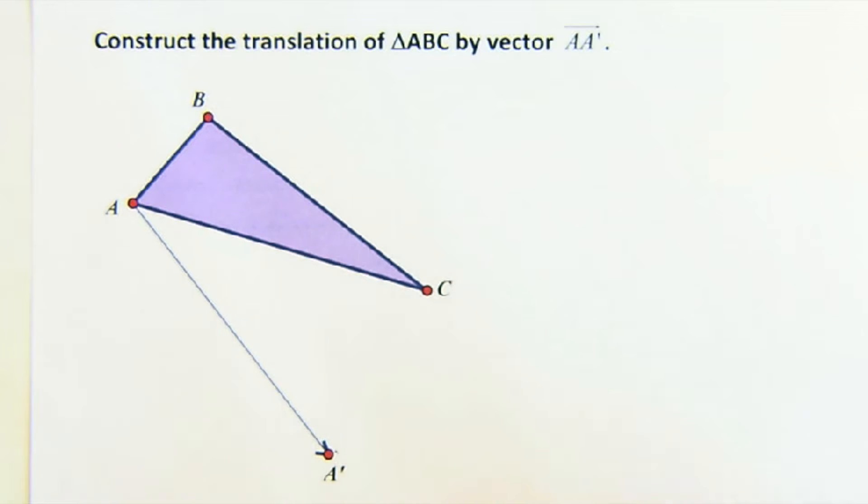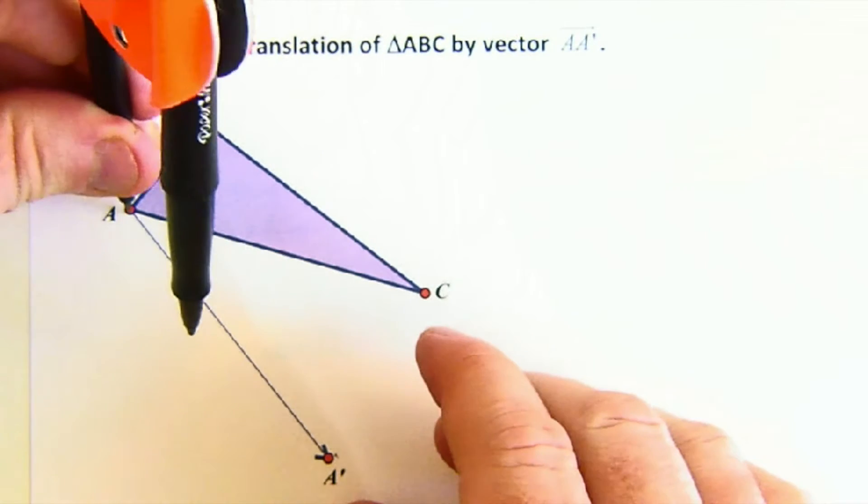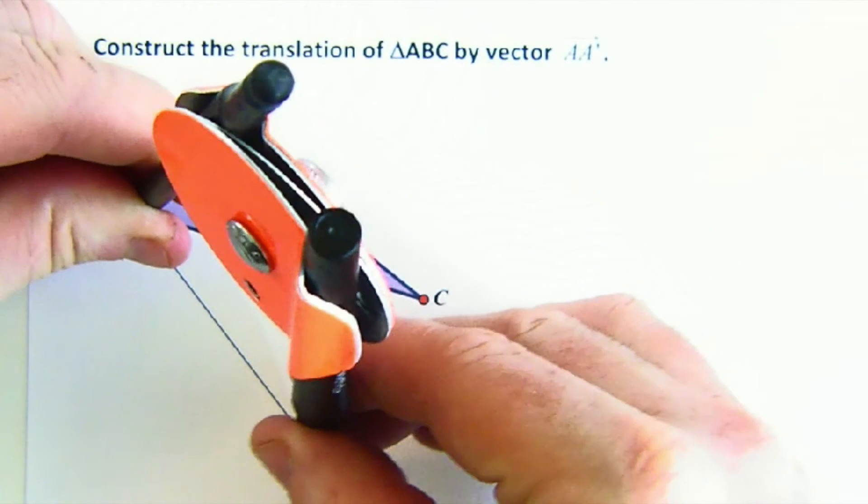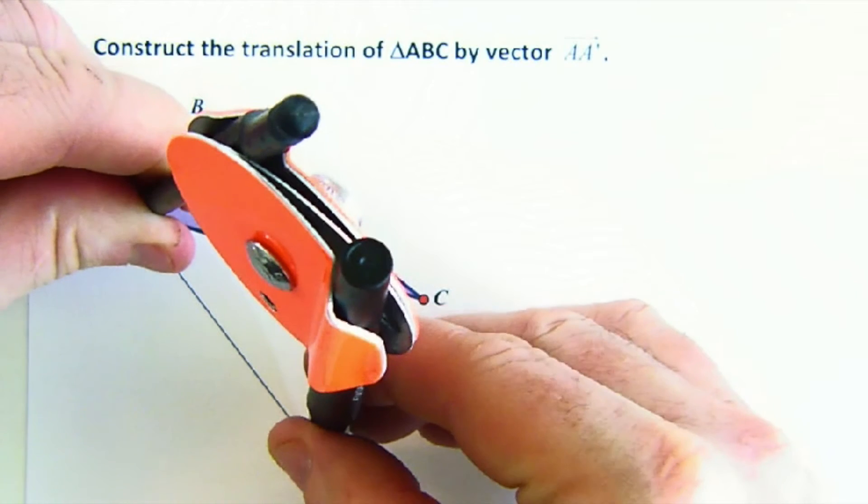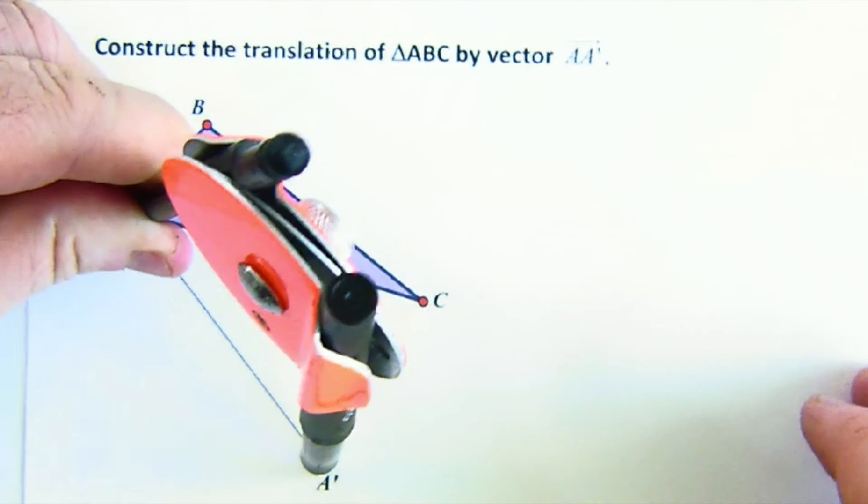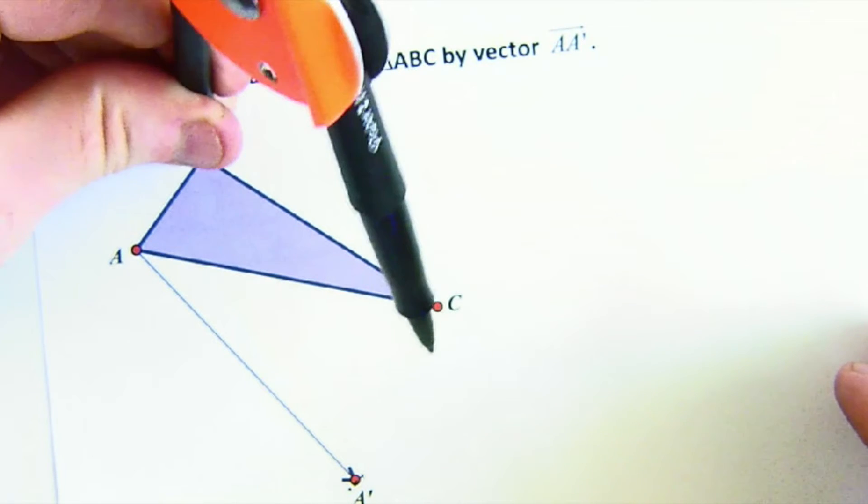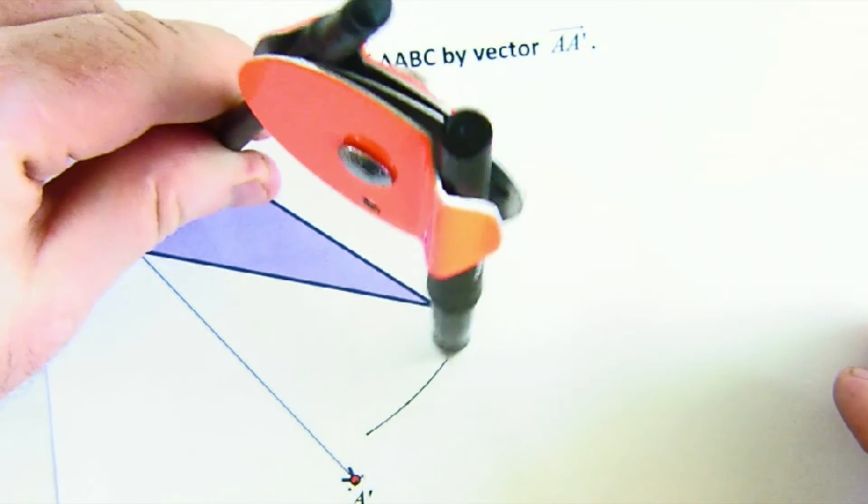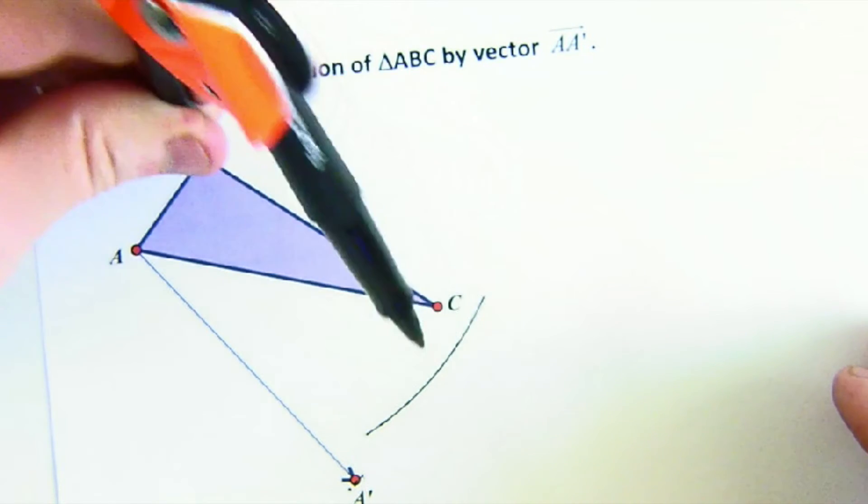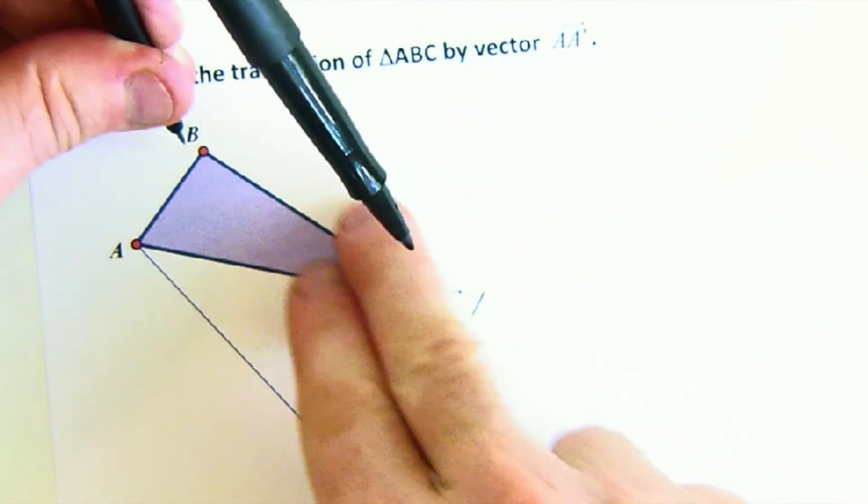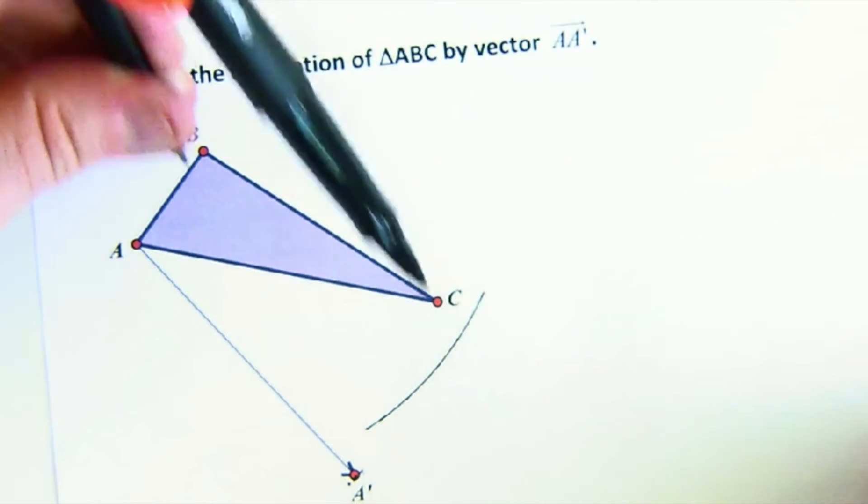So let's start with distance. We know that A traveled, so I'm going to mark A to A'. That's how far A traveled. So to be a translation, B would have to travel the same distance. So I'm going to make an arc. I don't know exactly. I know it's got to come down somewhere here, so I'll make an arc there.